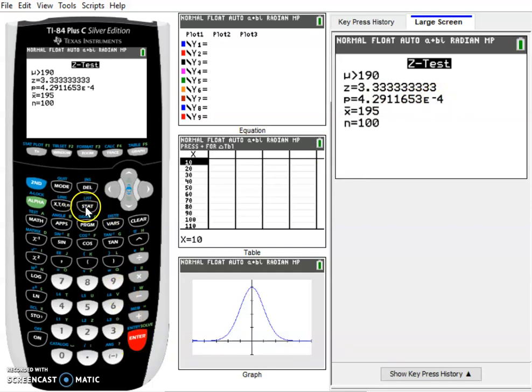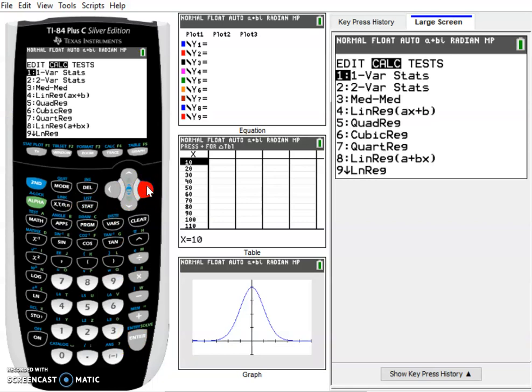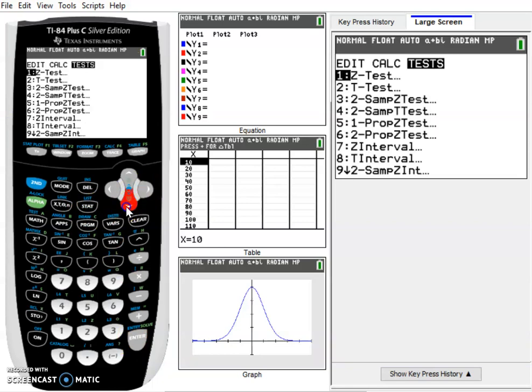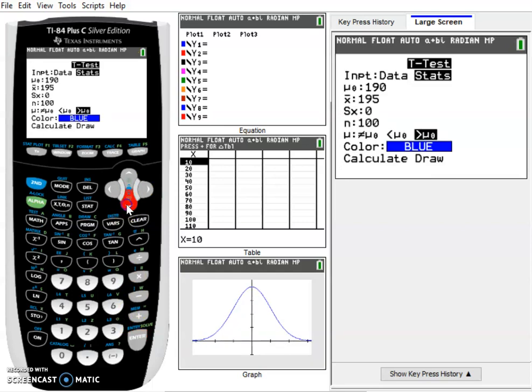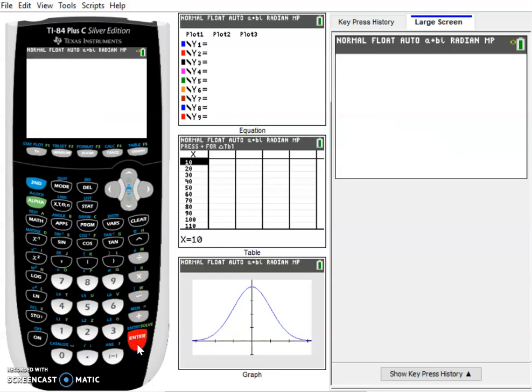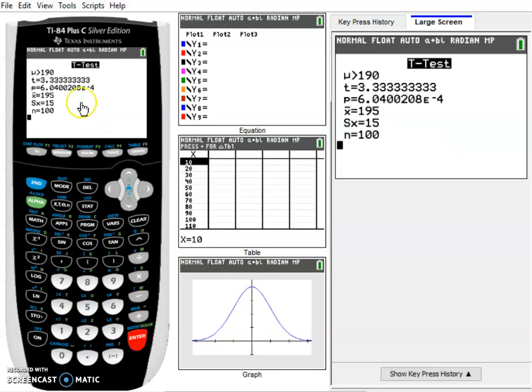Now let's look at the t-test. For a sample size this large, even if we were working from raw data, there would be very little difference. We can put in our standard deviation value here and go to calculate. Again, our p-value is slightly higher, but within an order of magnitude it's still very, very small. Our t-statistic is exactly the same since we use the same values.